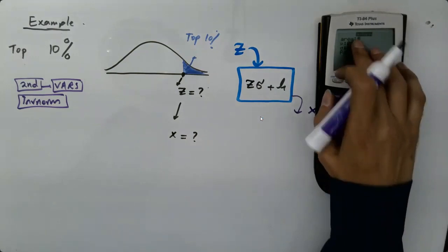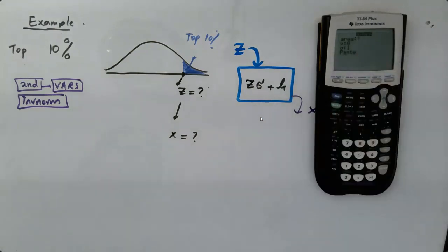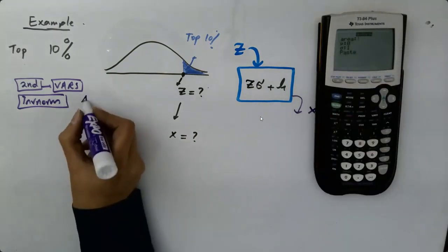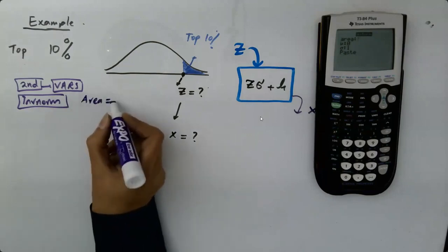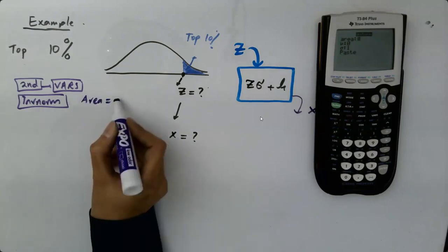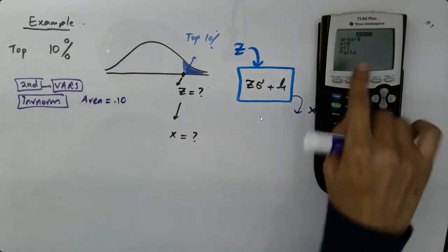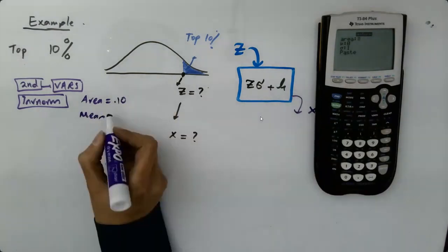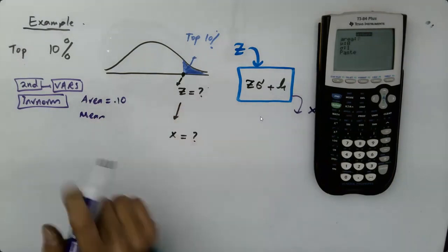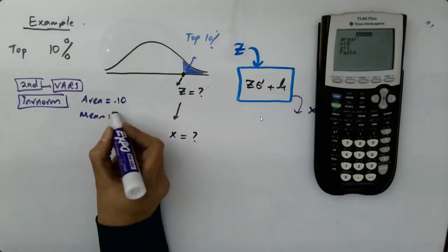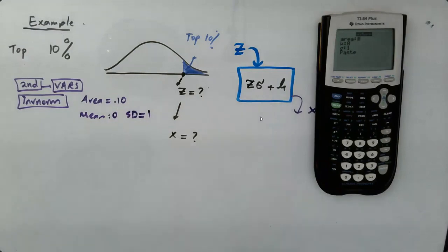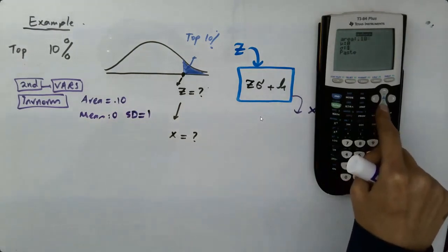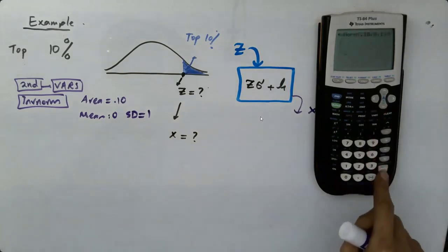Well, the area is 10%, point 10. And the mean is zero because you are trying to find your Z. Mean is zero with standard deviation one. So 10% point 10, mean is zero, standard deviation is one. Let's do the paste.